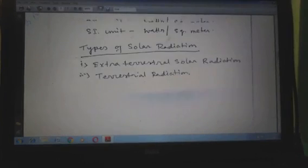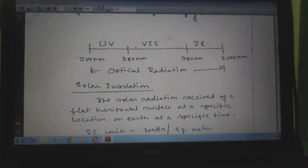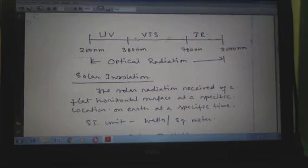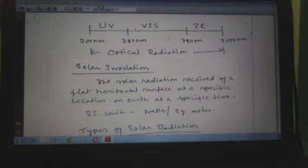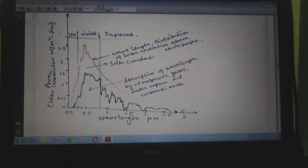Now, the spectral distribution of solar radiation. In this diagram, there are three regions: the ultraviolet region, the visible region, and the infrared region. The range between 200 to 380 nanometer is called the ultraviolet ray. The range of electromagnetic wave between 380 nanometer to 780 nanometer is the visible range, and when the range is between 780 nanometer to 3000 nanometer, it is the infrared ray. The x-axis indicates the wavelength in micrometer and the y-axis indicates the solar irradiation power in watt per meter square.